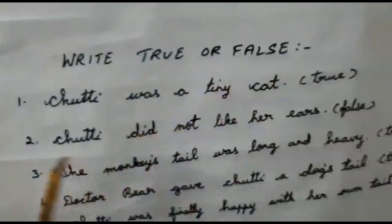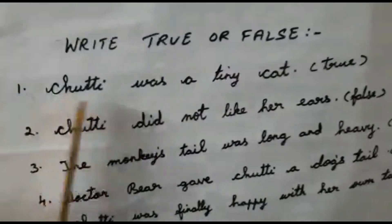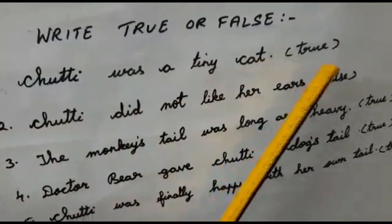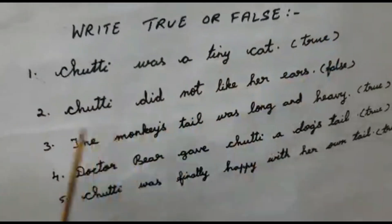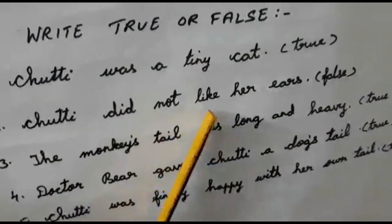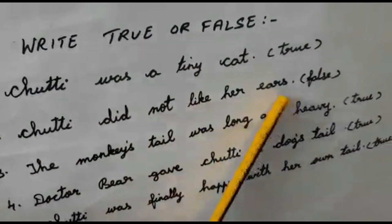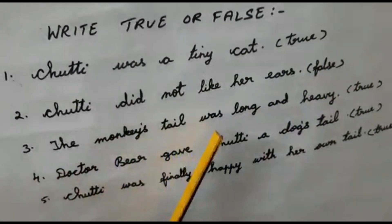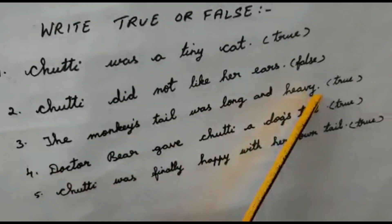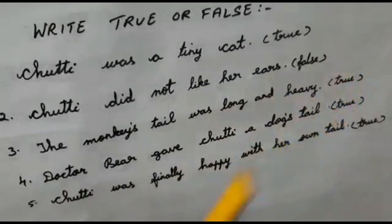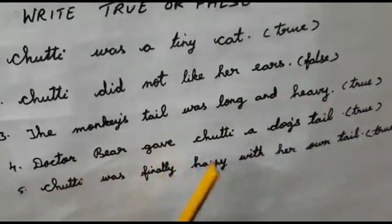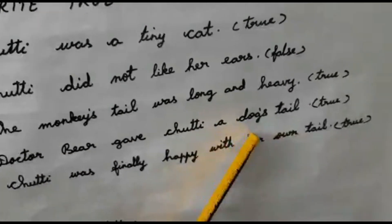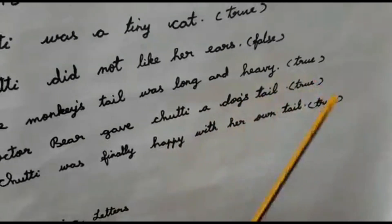Now let's go to the True or False. Chutti was a tiny cat — True. Chutti did not like her ears — False. The monkey's tail was long and heavy — True. Dr. Bear gave Chutti a dog's tail — True.